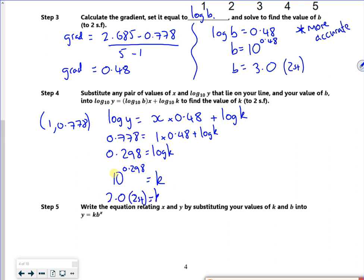Same idea, get a better answer, put it down and then round it. So now I've got my two constants. I've got k and I've got b. So I said that originally my equation was k times b to the power x. So now, k is 2.0 and b is 3.0. There you go, I've done it.